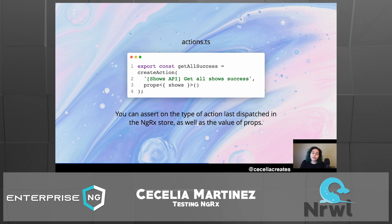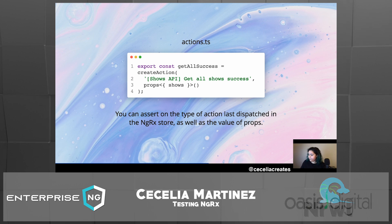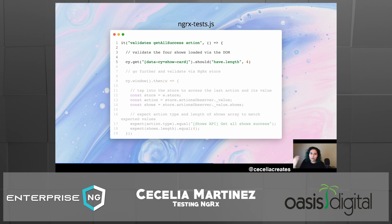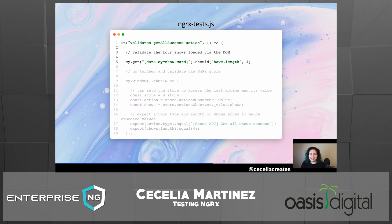So how can we test this? You can assert on the type of the last dispatched action in the NGRX store, as well as the value of the props passed through. In our test code, you might typically validate via the DOM — for example, using cy.get with a data-cy show-card selector and asserting it should have a length of four. That validates that everything is displaying correctly in the DOM.